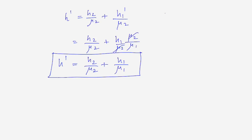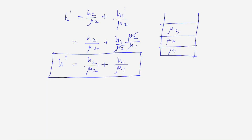Remember, if there are several liquids with refractive indices μ1, μ2, μ3 and depths h1, h2, h3, then the apparent depth is simply the sum h1/μ1 + h2/μ2 + h3/μ3.